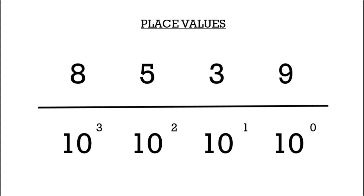So if we're looking at a bigger number like 8,539, we can break it down to 9 times 10 to the power of 0, 3 times 10 to the power of 1, and so forth and so on with each place value being multiplied by 10 to the power of something.